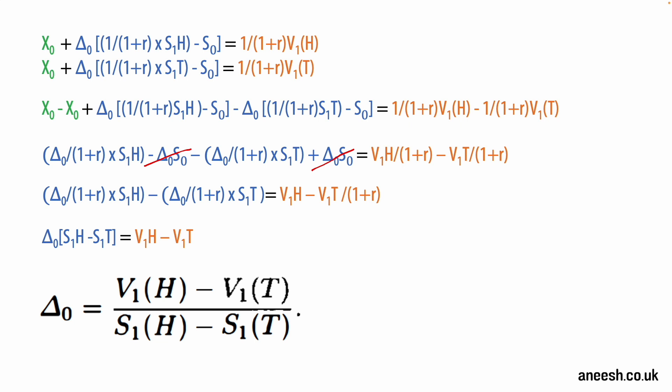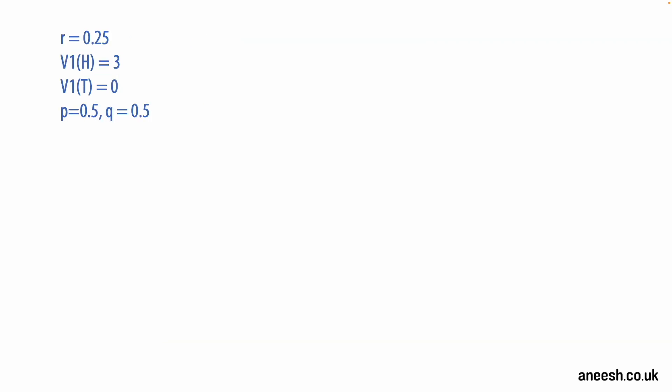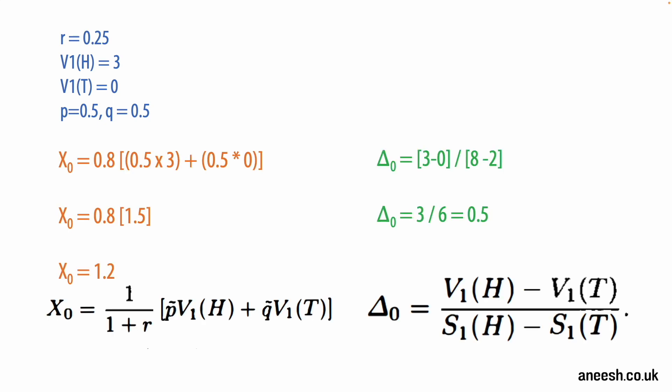So to conclude this video I'll inject our binomial example where r is equal to 0.25, V1(H) for that option is going to be 3, and V1(T) is 0, and p and q are equal at 0.5. So simply plugging in these values for our X0 formula will leave 1.2, and then the delta zero value is going to be 0.5.